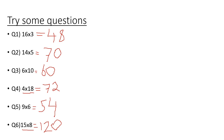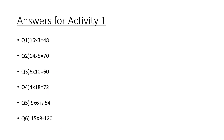For question 2: 10 times 5 is 50, 4 times 5 is 20, 50 plus 20 gives you 70. Question 4: 4 times 10 is 40, 4 times 8 is 32, 40 plus 32 gives you 72. Question 6: 15 times 8 — 10 times 8 is 80, 5 times 8 is 40, 80 plus 40 gives you 120.